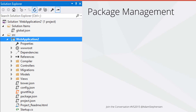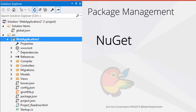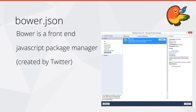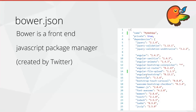We only use NuGet now for getting .NET Framework-based packages. We use Bower for front-end packages and NPM for Node packages. Now instead of getting client-side libraries like Twitter Bootstrap or Moment from NuGet, we use Bower as our client-side package manager. To add client-side packages, we simply add them to Bower.json.